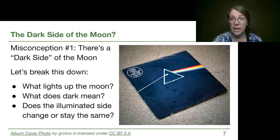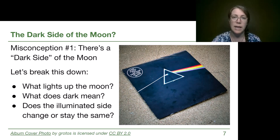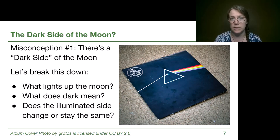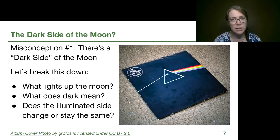Let's tackle a couple of common misconceptions. The first is that there's a single dark side of the moon. This misconception suggests that one side of the moon never gets sunlight and the other side is always lit up — a light side and a dark side. I have a picture here of the Pink Floyd album, 'The Dark Side of the Moon.' Let's break this misconception down into a couple of pieces.